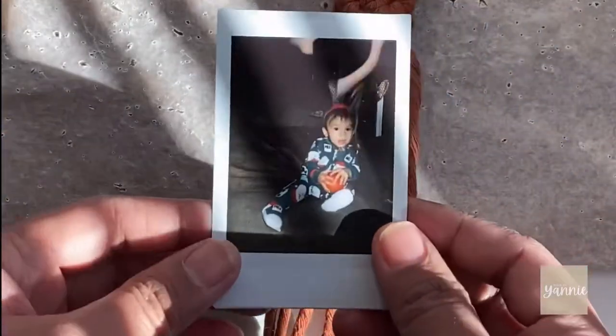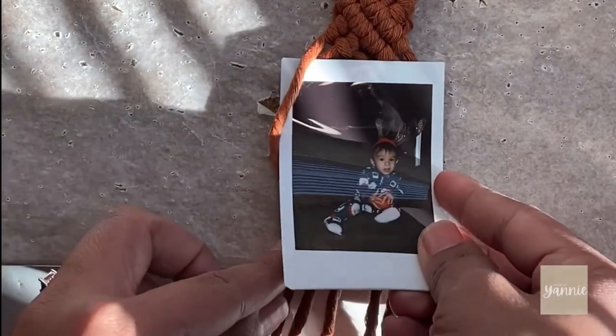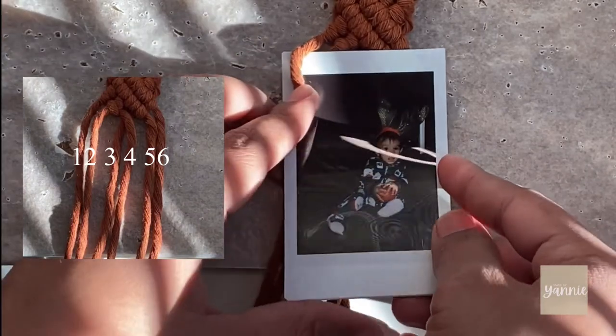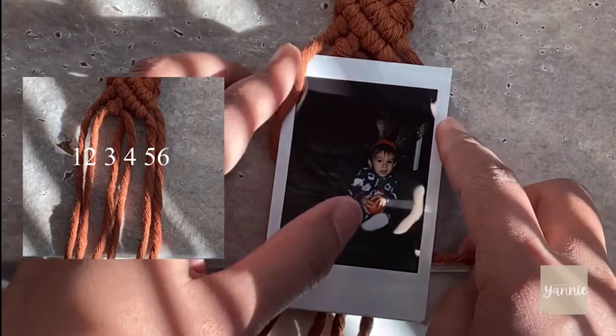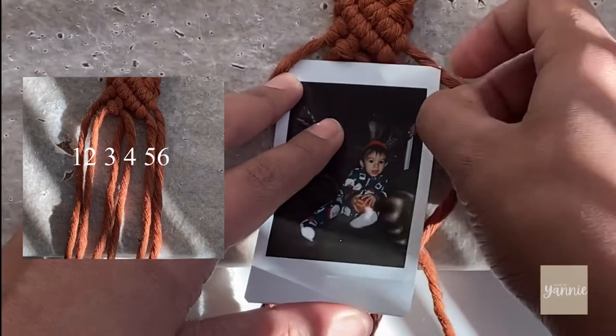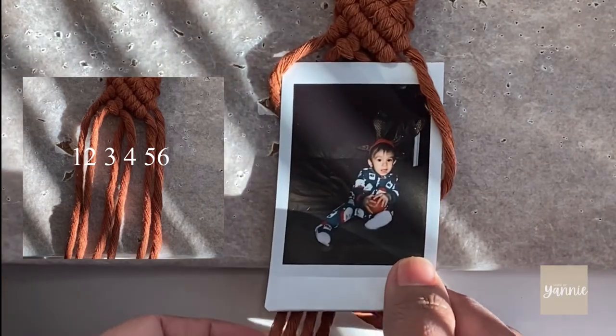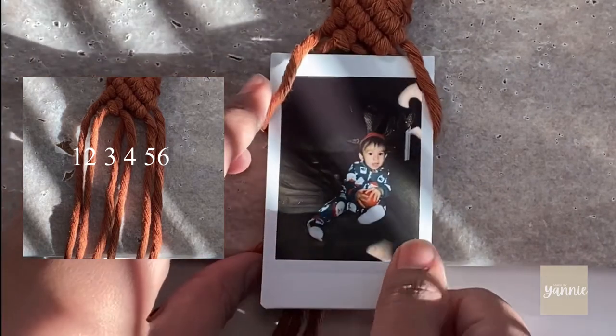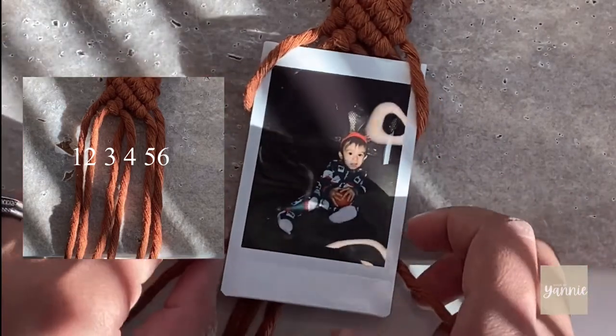In this part, we are going to grab our Polaroid. Isn't he so adorable? This part is a little bit tricky. So I've added a picture of the cords we are going to be working on. So bring cord one over and under the photo and cords two, three, four and five. Bring it to the far right side, creating a slant and set that aside for now. Now grab cord six and repeat the same step. Now that both one and six are on their opposite sides, you want to adjust the cords and pull it a little bit to hold the upper part of the Polaroid.